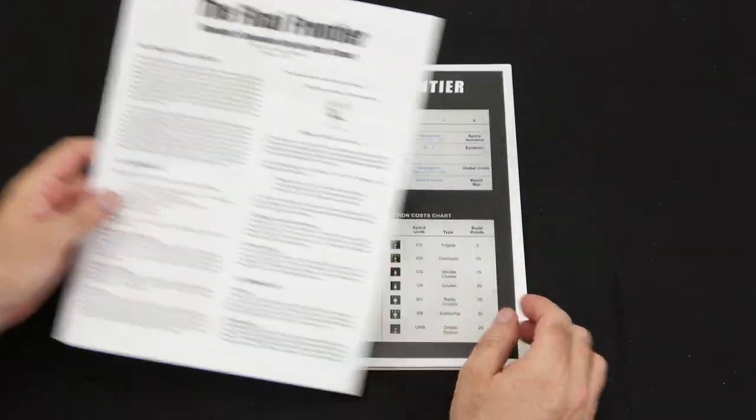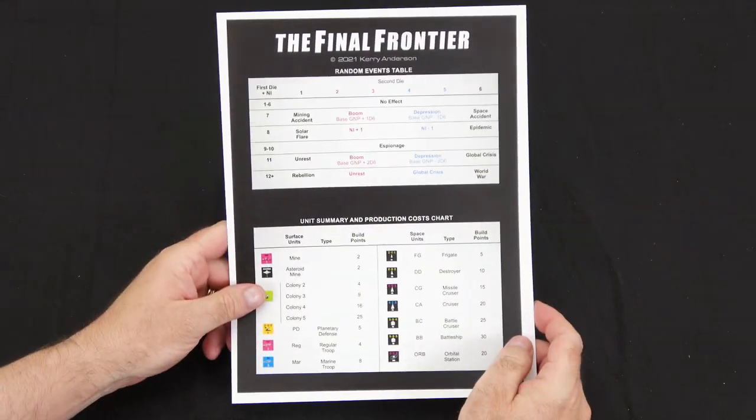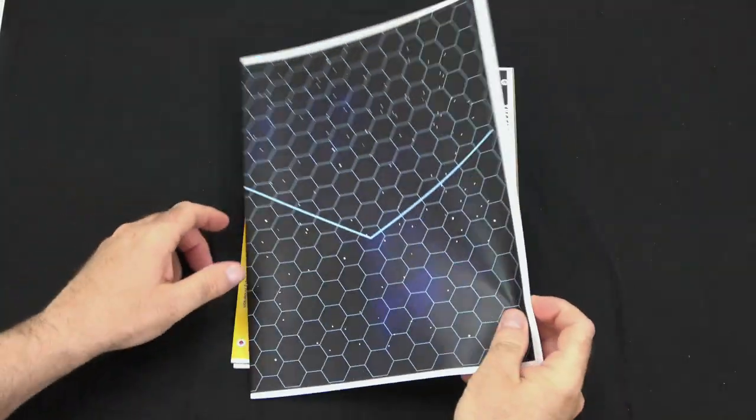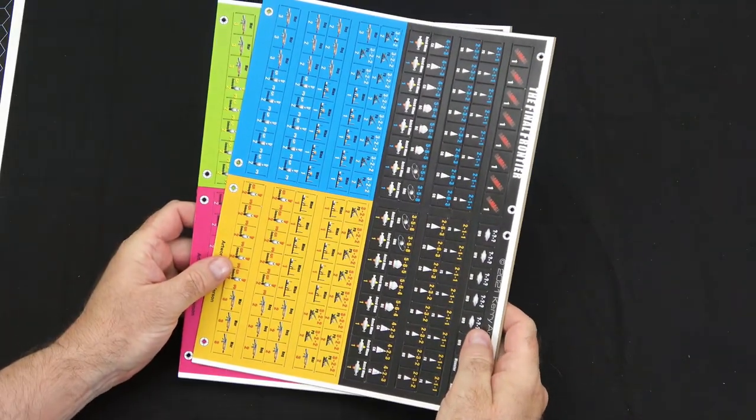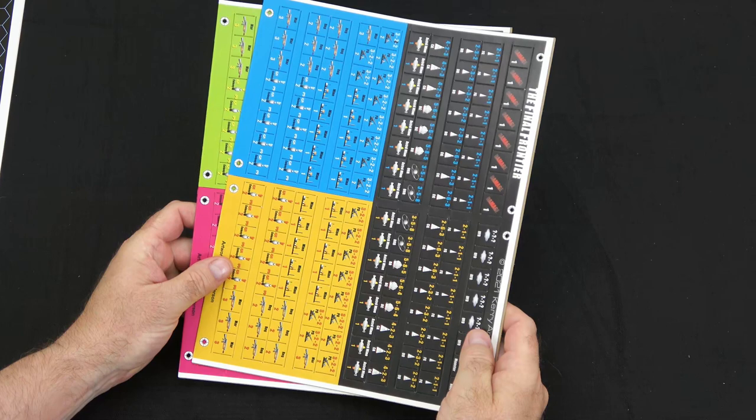And we have our rules, player aid card, our maps, and our counter sheets. So let's set up the map and take a closer look at the game.